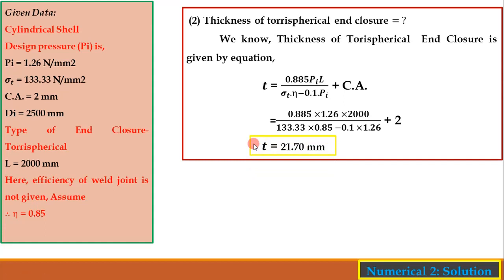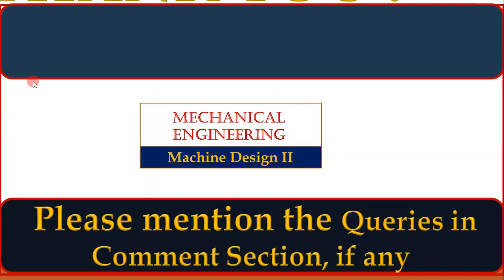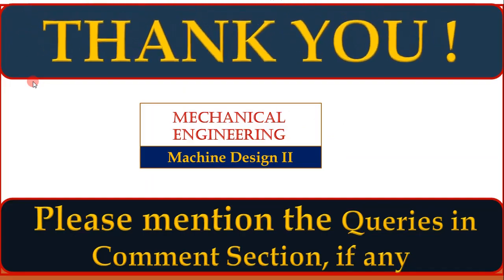This completes the second numerical. Key reminders: weld joint efficiency was assumed as 0.85 since it was not given, and allowable tensile stress sigma_t was calculated from Syt by assuming fs = 1.5 because the material is ductile. This concludes the video lecture. Thank you for watching — please mention any queries in the comment section.